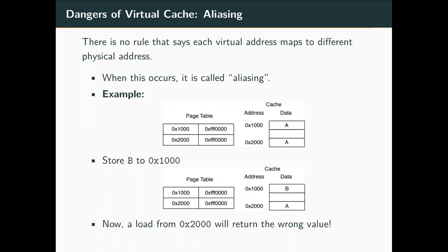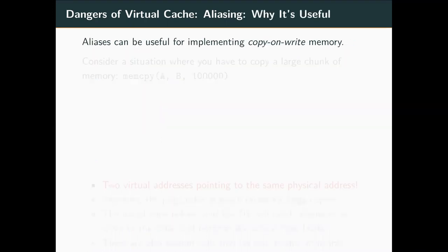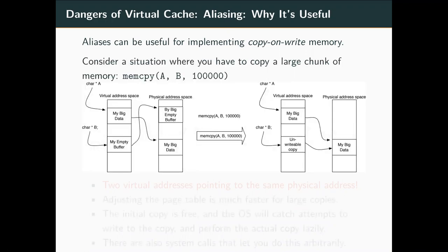With a virtual cache, both aliases get pulled into two different cache slots. When a new value is stored into 0x1000, it should update both since they point to the same physical address, but it won't because the virtual cache uses virtual addresses. Loading from 0x2000 afterward gives the wrong stale value. The most common cause of aliasing is copy-on-write, where instead of physically copying data, you just redirect the pointer.